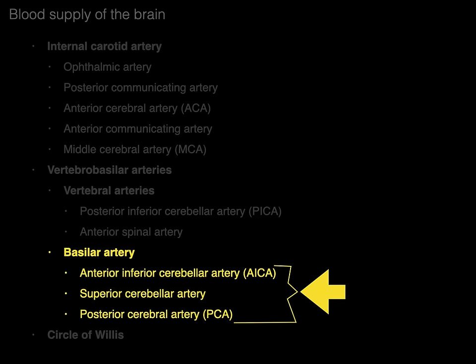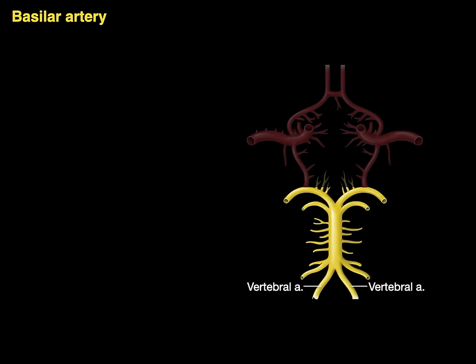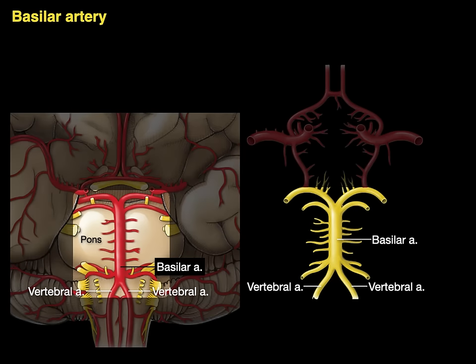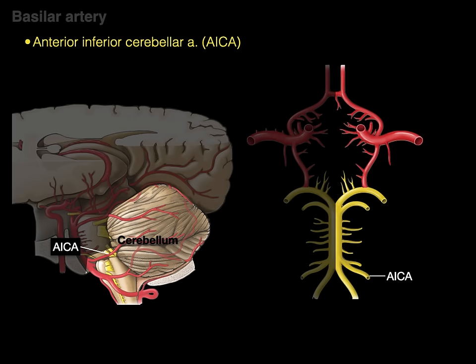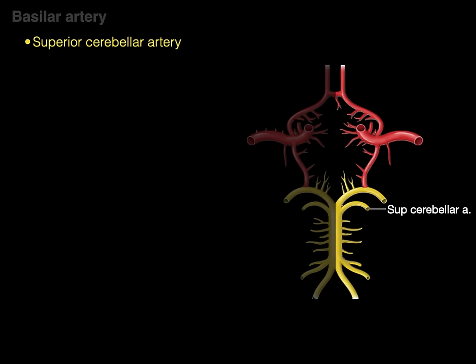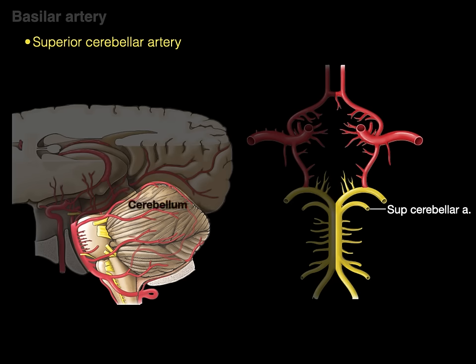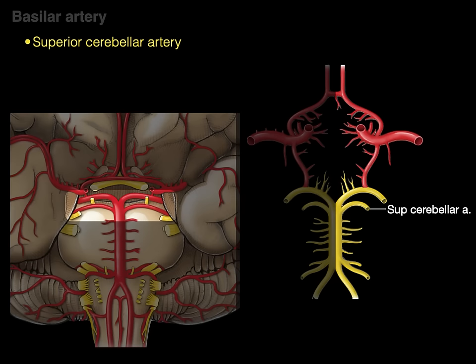The basilar artery is formed by the two vertebral arteries joining together, coursing vertically along the pons between the pons and the clivus of the skull. Branches include the AICA — the anterior inferior cerebellar artery — which supplies the front and bottom of the cerebellum, and the superior cerebellar artery, more rostrally located, which supplies the top of the cerebellum.